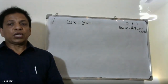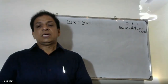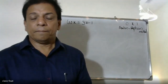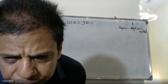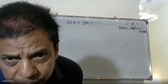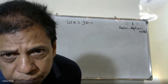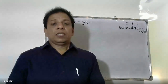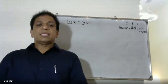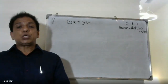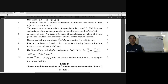Good morning, students. Today's problem: find a root between 0 and 1 for cos x equals 3x minus 1 using the Newton-Raphson method, correct to 3 decimal places.